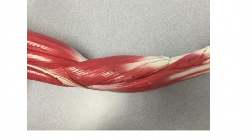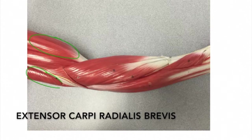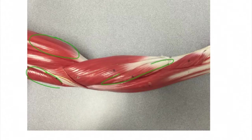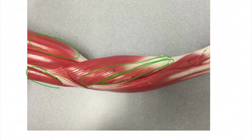We have rotated the model again to expose the extensor carpi radialis longus and the extensor carpi radialis brevis. We have almost come to a full circle on the forearm as we are getting closer to the biceps brachii and leaving the triceps brachii. The extensor carpi radialis brevis has its origin at the humerus, insertion at the 3rd metacarpal, and action to extend the wrist and abduct the hand. The extensor carpi radialis longus also originates from the humerus and inserts to the 2nd metacarpal, with the same action. We also see the brachioradialis here.